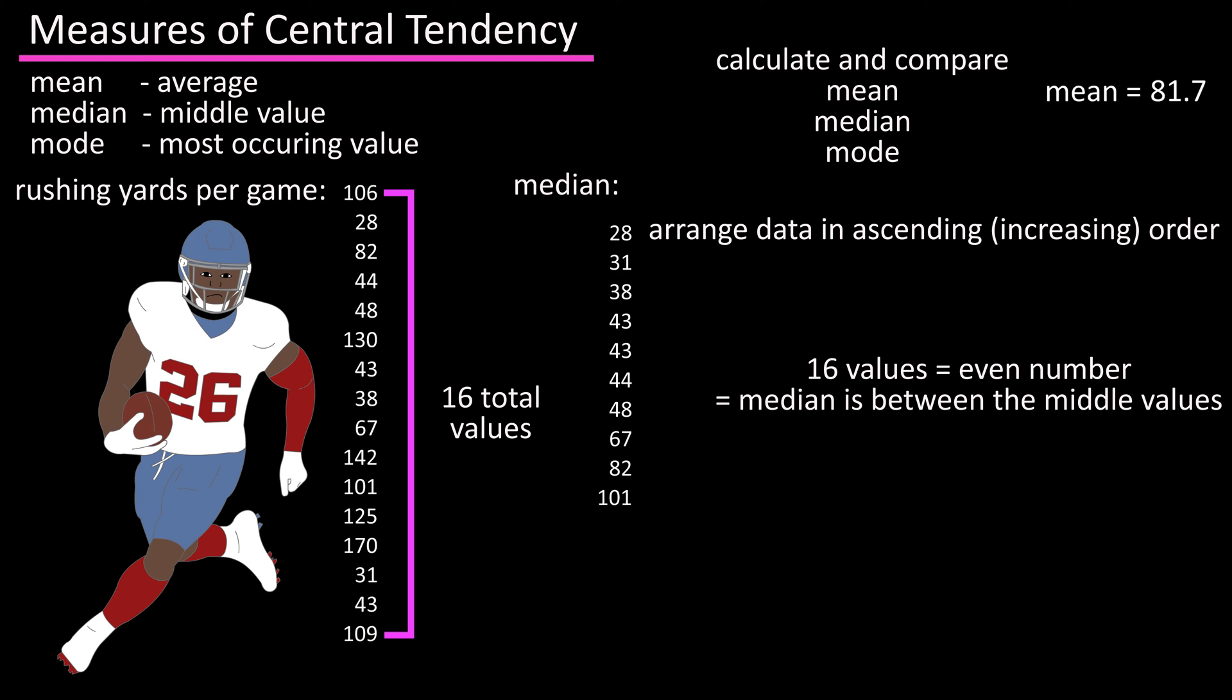We will arrange the values in ascending or increasing order, draw a line here in the middle, where we have 8 values lower and 8 values higher, and add these two middle values together and divide that total by 2, which gives us 74.5, which is our median.